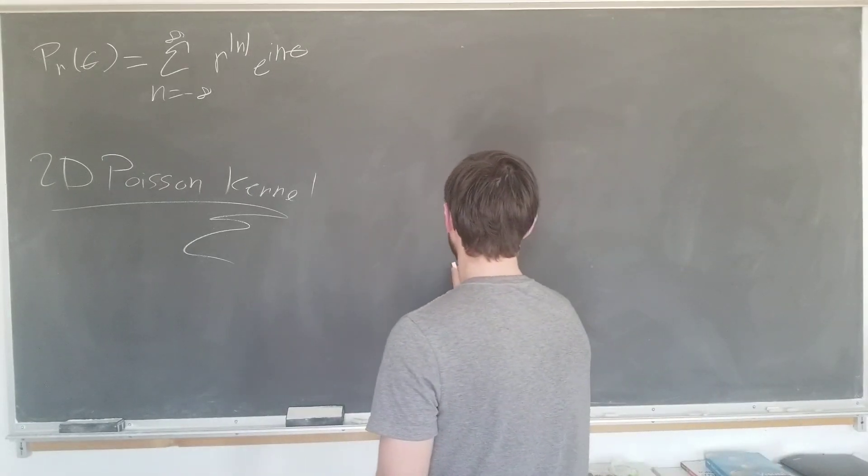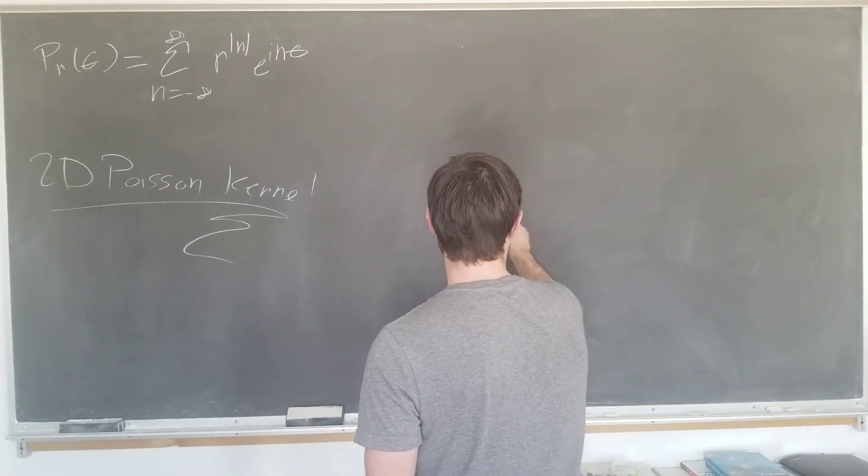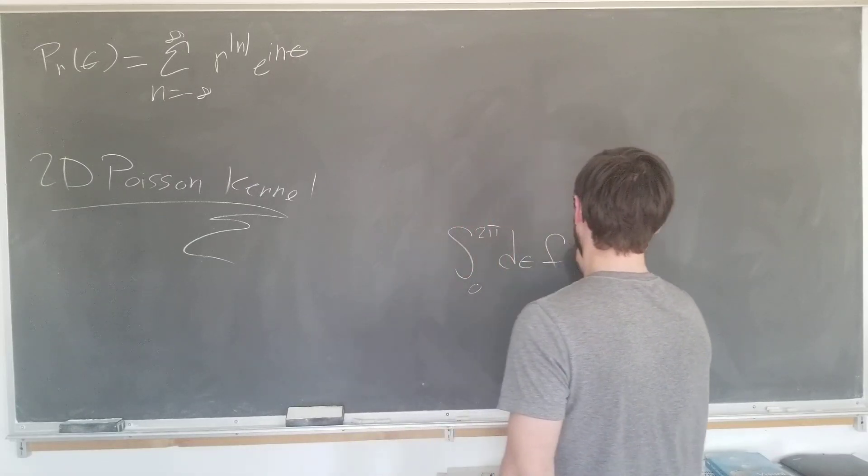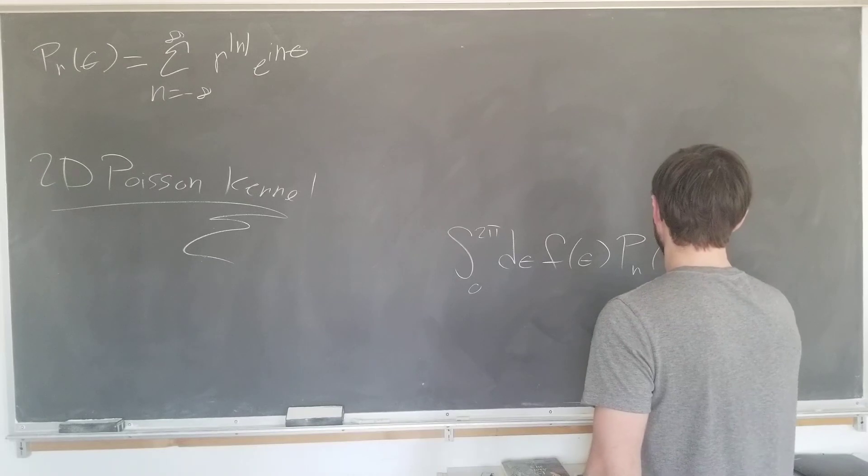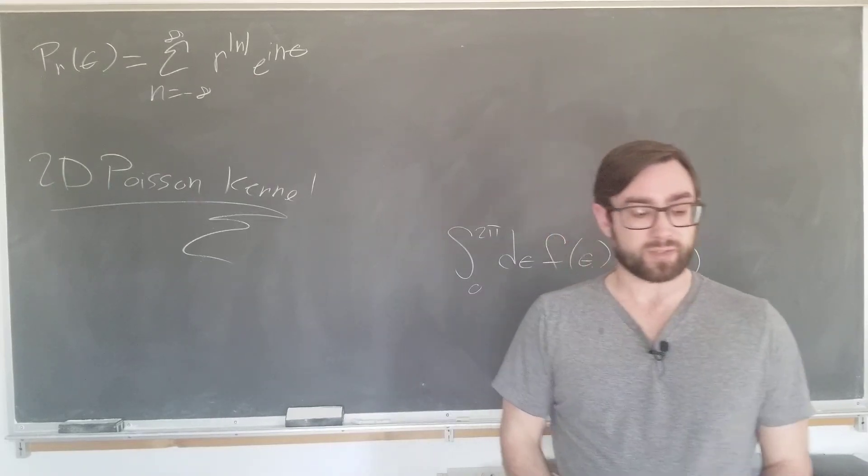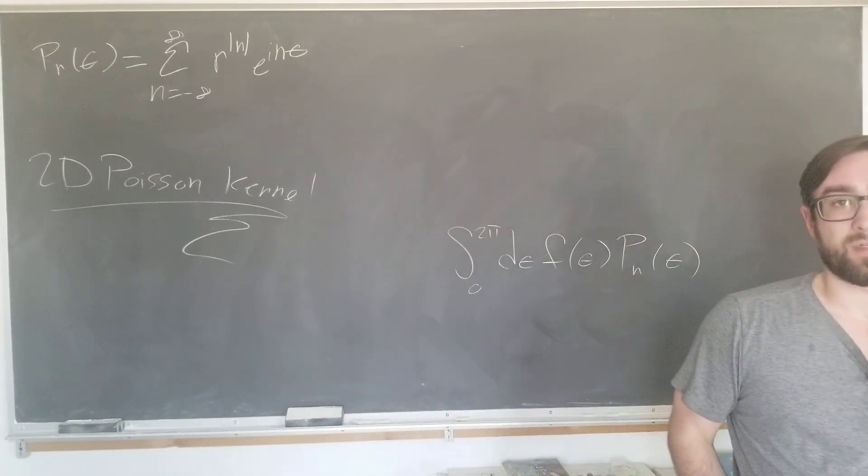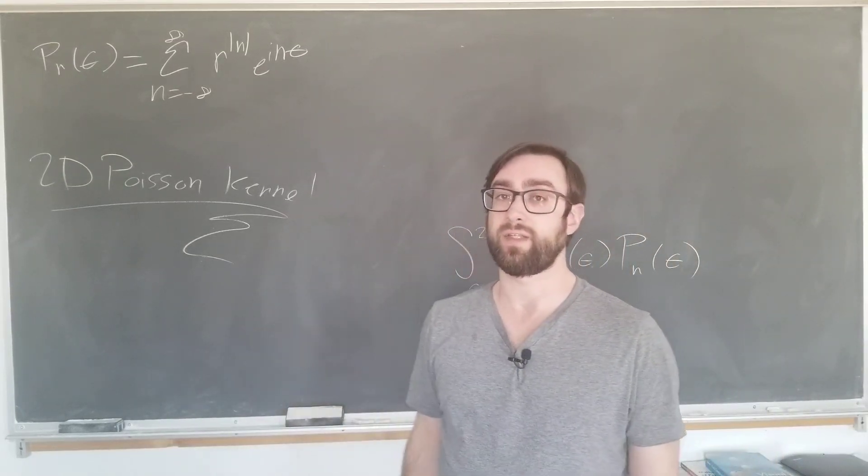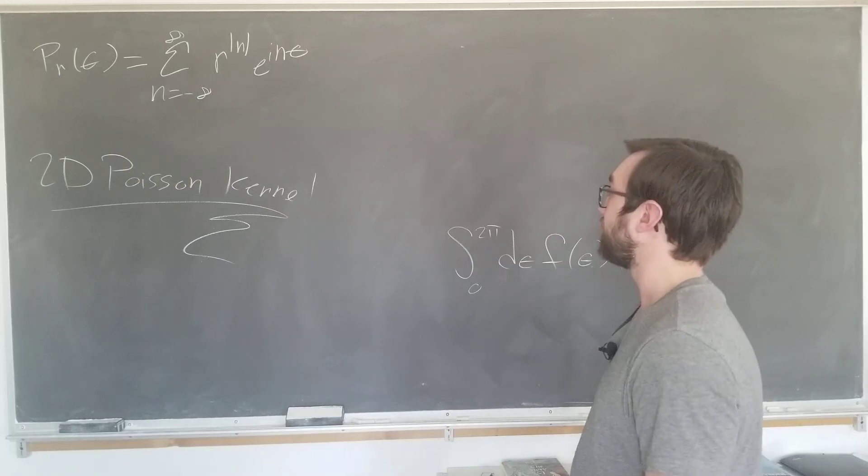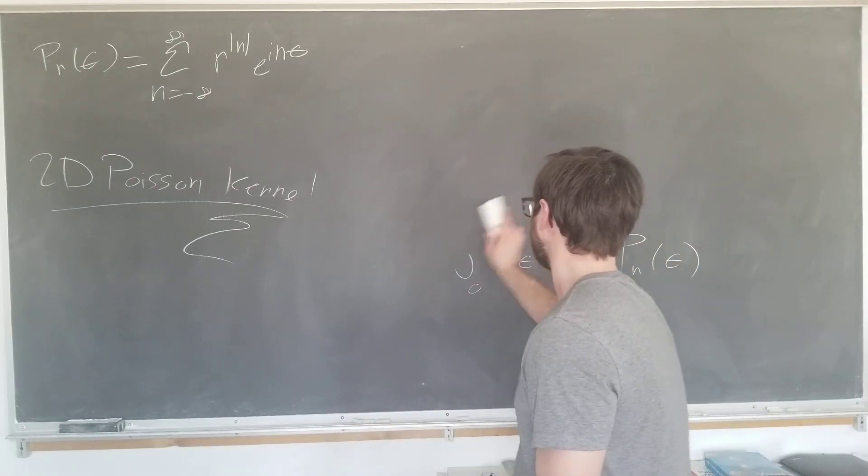And you typically see this kernel inside an integral. So we have some integral like zero to two pi of some function of theta times the Poisson kernel. First thing that you'd notice when you actually try to evaluate this integral is that we don't have a closed form expression for the sum. We want to evaluate the sum first and then do the integral. So let's see if we can find a closed form expression for this.